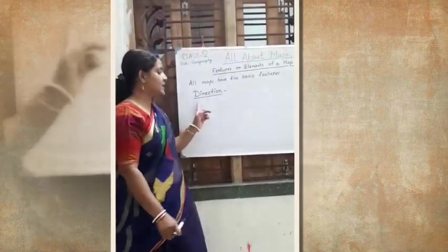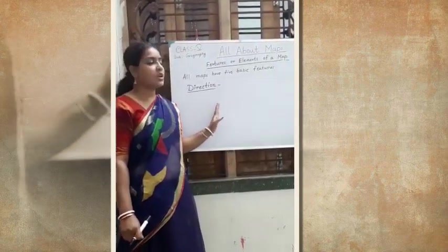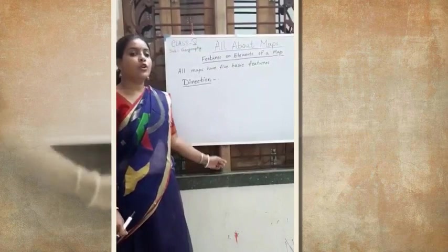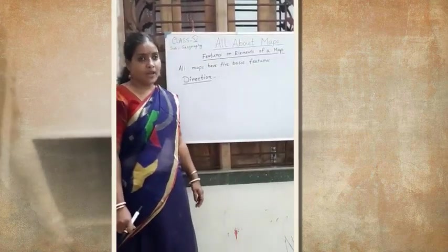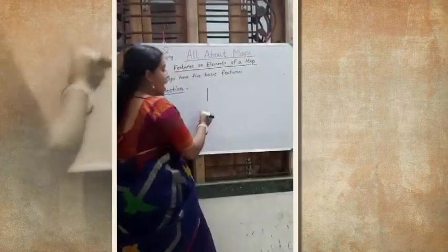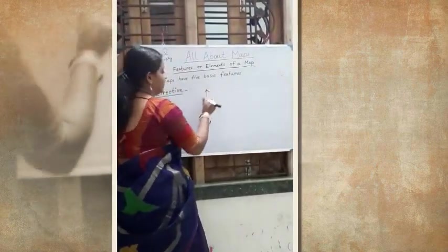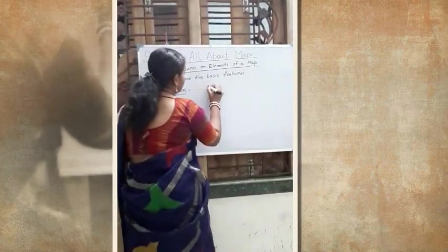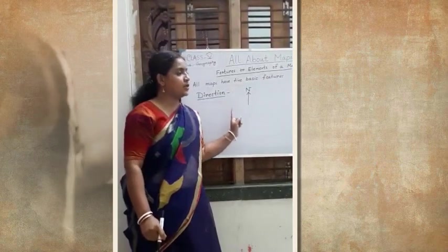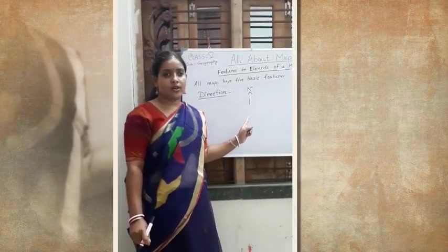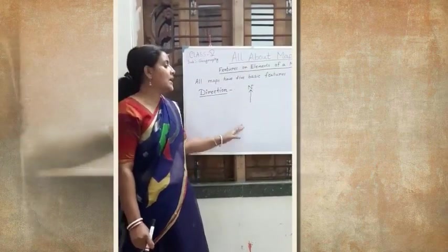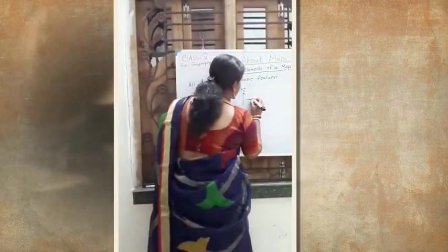The next feature is direction. How we came to know about the direction by seeing a map? If you look carefully at a map, you will find a line with an arrow drawn above it and the letter N written above it. This line you can find either in the upper right hand side corner or at the bottom of the map. This line is called north line.